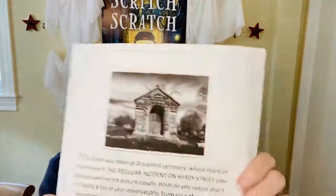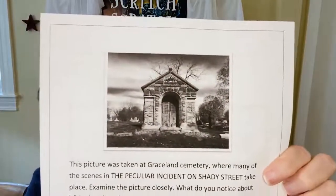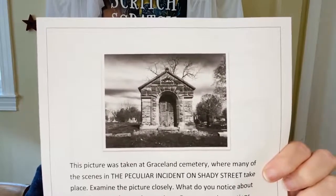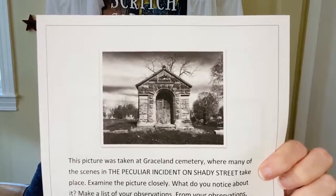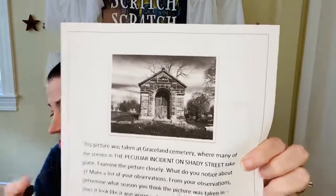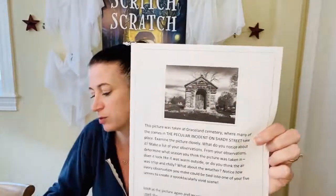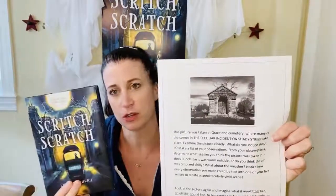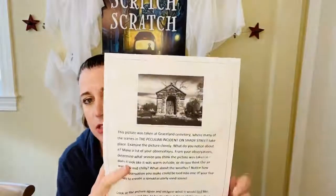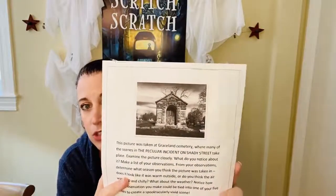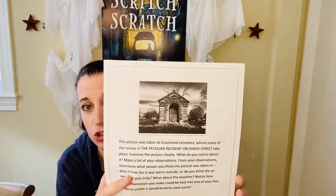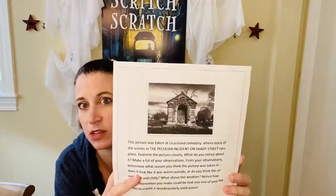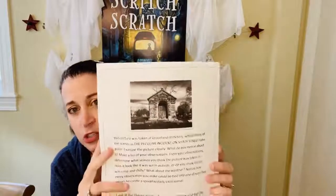Let me show you what I'm talking about with an activity. I have a photo I'm going to hold close to the camera. Take a look at this little building — this is a mausoleum or tomb in Graceland Cemetery. It's an important little building because I used it a lot when researching for 'The Peculiar Incident on Shady Street' and also to some degree for 'Scritch Scratch.' I spent a lot of time in Graceland, and I thought this photo would be great to work into a workshop.